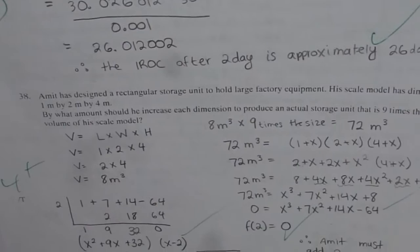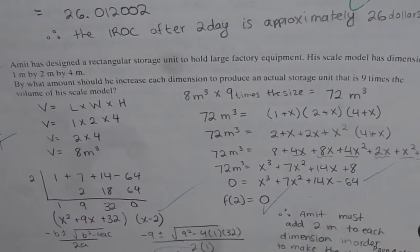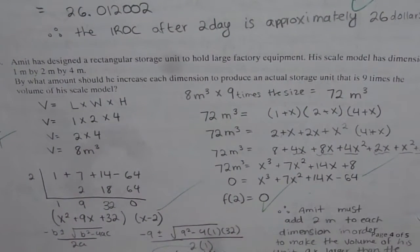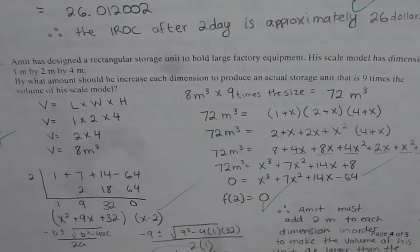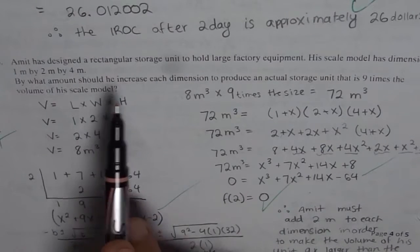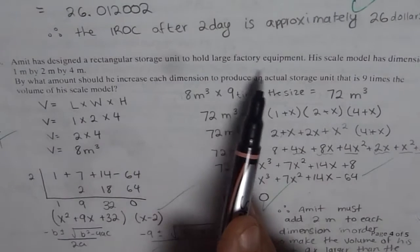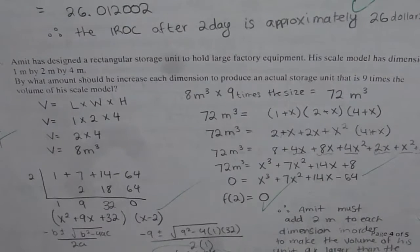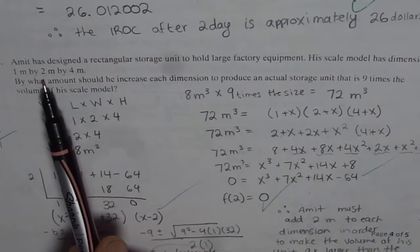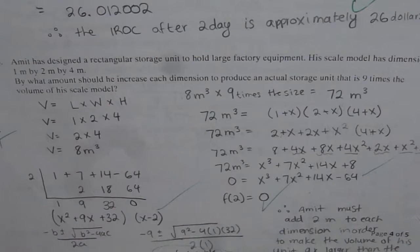The question is, now in this test paper it is question number 38, where it says: Amit has designed a rectangular storage unit to hold large factory equipment. His scale model has dimensions 1 meter by 2 meter by 4 meters. By what amount should he increase each dimension to produce an actual storage unit that is 9 times the volume of this scale model?